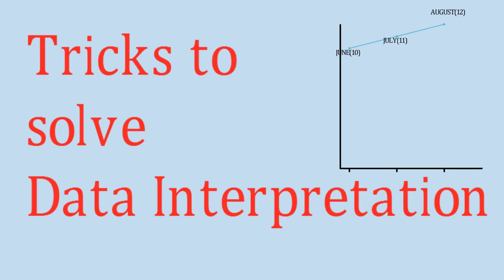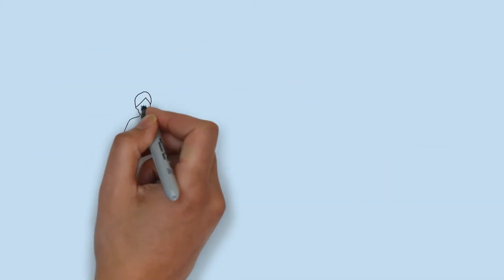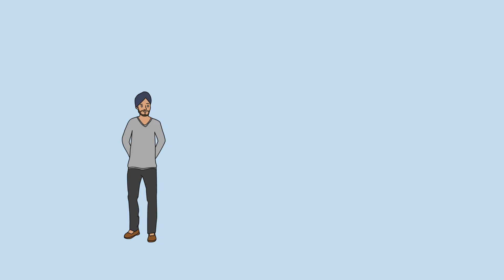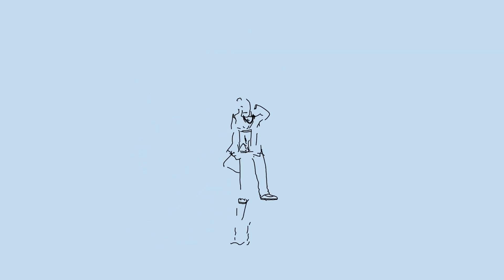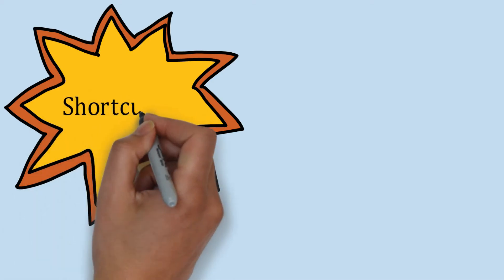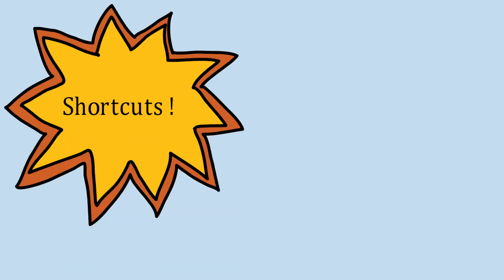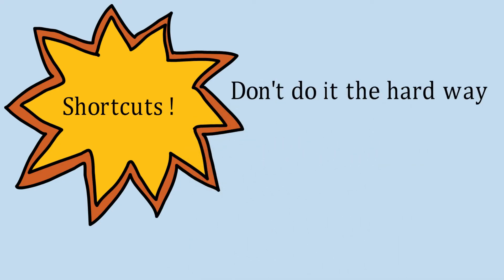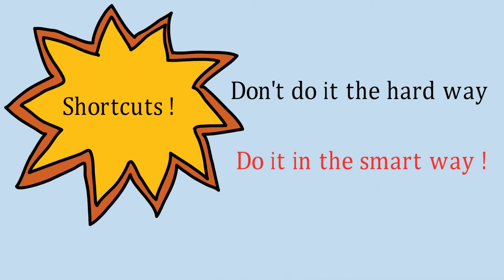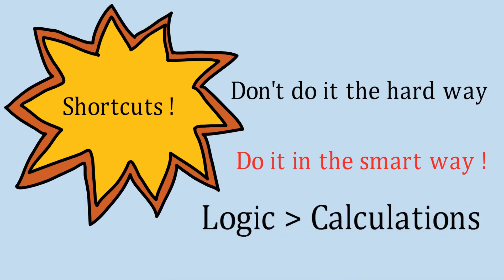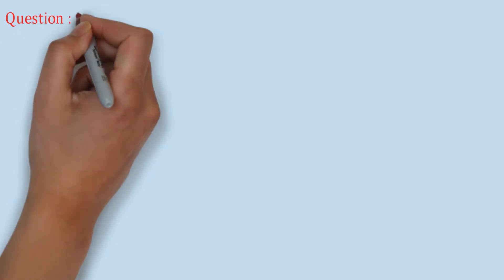When we solve these types of questions, we come across very lengthy calculations. We literally pull our hair — we think of all these concepts in order to solve the questions and end up getting frustrated. So our focus is to build up these concepts using shortcuts and tricks. The main golden statement is: don't do it the hard way. When it comes to data interpretation, do it the smart way. Always remember: logic is greater than calculation. So we will focus more on logic and less on calculations.